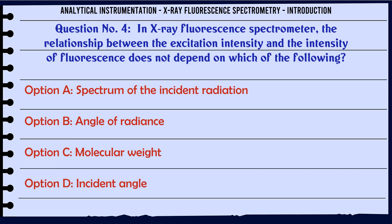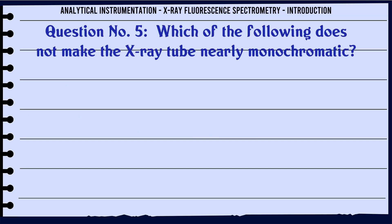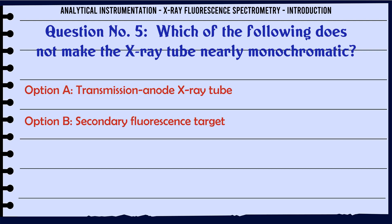In X-ray fluorescence spectrometer, the relationship between the excitation intensity and the intensity of fluorescence does not depend on which of the following? Options: a. Spectrum of the incident radiation, b. Angle of radiance, c. Molecular weight, d. Incident angle. The correct answer is: Incident angle.